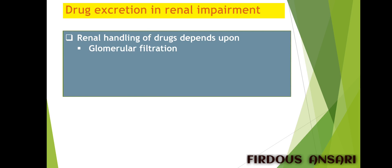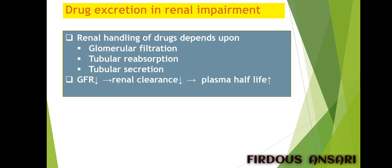For drug excretion in renal impairment, renal handling of drugs mainly depends upon glomerular filtration, tubular reabsorption, and tubular secretion — and all three of these are impaired in renal impairment. This results in reduced glomerular filtration rate, causing reduced renal clearance, thereby increasing the plasma half-life of the drug and causing toxicity.